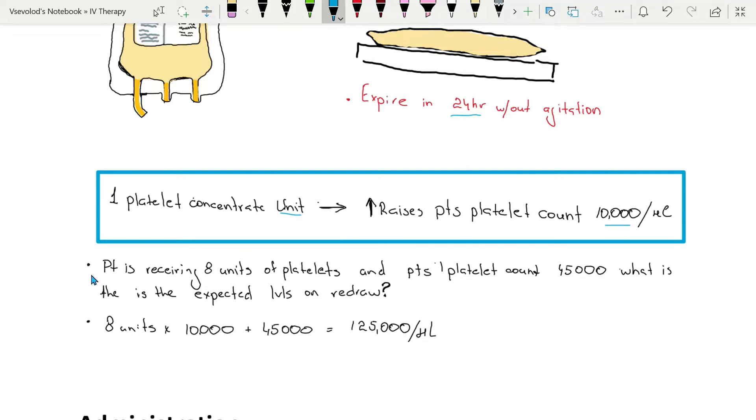So let's solve a little problem. Patient is receiving 8 units of platelets and patient's platelet count was 45,000. What is the expected level on the redraw?